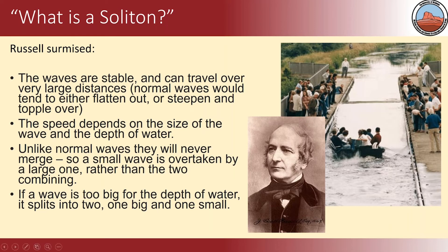These waves have at least four properties. They're stable. They can travel over very large distances. Their speed depends upon the depth of the water. And unlike normal waves, they never merge — a small wave can overtake a larger one. If the wave is too big for the depth of water, it will make two. This was against Newton and Bernoulli, and Russell could not figure out how it was formed.